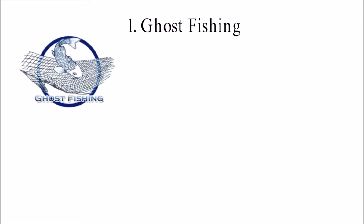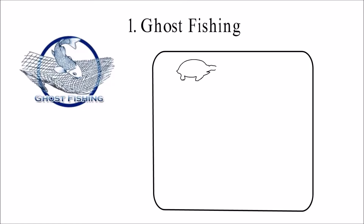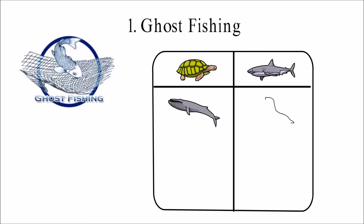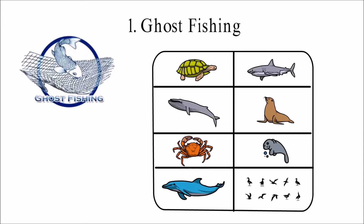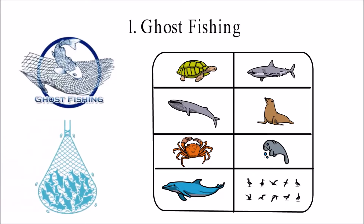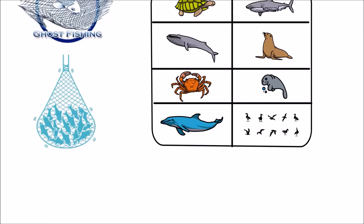1. Ghost Fishing. A type of fishing called ghost fishing happens when fishing nets that have been thrown away still catch fish. Ghost nets can catch any animal that swims in the sea — sea turtles, sharks, whales, seals, crustaceans, manatees, dolphins, and more are among the animals most at risk. Ghost nets can also trap seabirds. Animals can get into dangerous situations when caught in ghost nets; in the worst case scenario, abandoned fishing nets can cause serious injuries and death. Ghost nets can cut down on the number of animal species in the ocean.